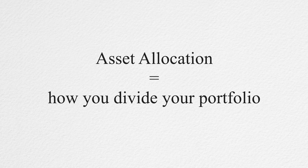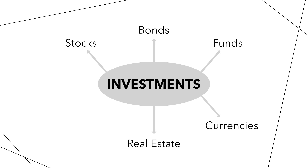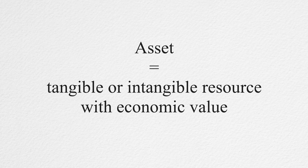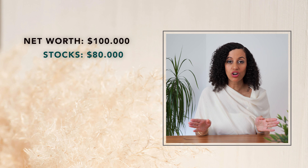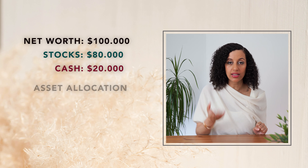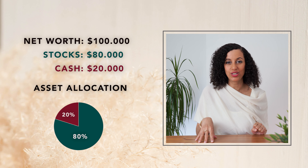Asset allocation is the way you divide your portfolio — your collection of all your investments — into the different types of investments or assets. An asset is a tangible or intangible thing with economic value, like stocks, bonds, real estate, cash, cryptocurrency, and so on. Allocation is how much of each asset you own and in what percentage they all add together. For example, if your net worth is $100,000 and you have $80,000 in stocks and $20,000 in cash, then your asset allocation is 80% stocks and 20% cash.